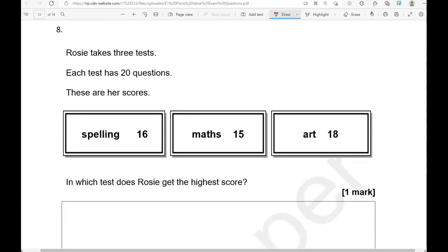Rosie takes three tests. Each test has 20 questions. These are her scores: spelling 16, maths 15, art 18. In which test does Rosie get the highest score? We're looking for the highest number out of 16, 15, and 18. When you count the numbers, we're going to start with 15 because it's the lowest, and then you move to 16, and then you have 17, and then 18. So 18 is the highest of them all.